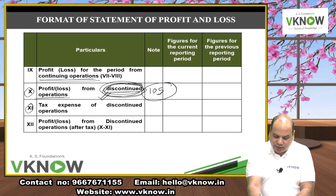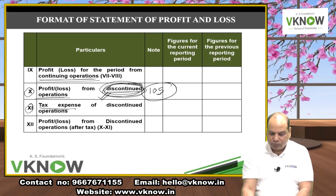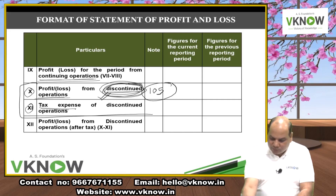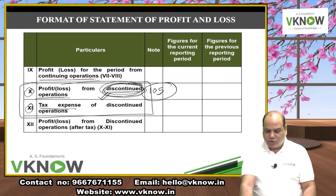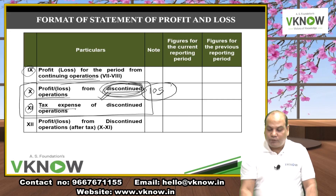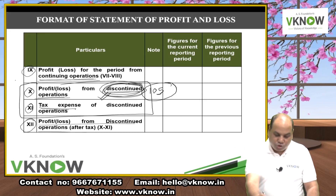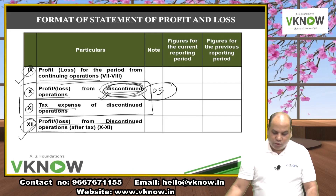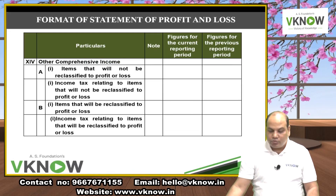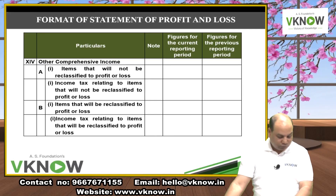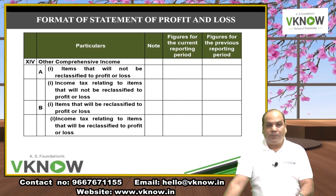Profit from Continuing Operations (point 9) plus Profit from Discontinued Operations (point 12) gives Total Profit — shown at point 13 as 'Profit and Loss for the Period' (9 + 12).